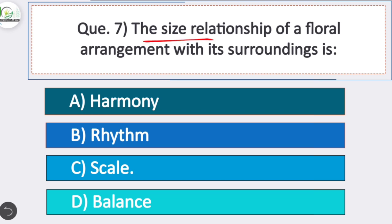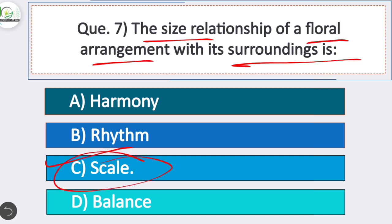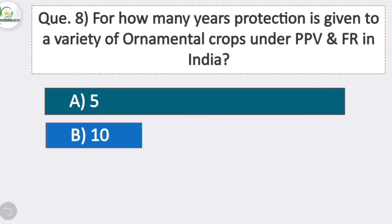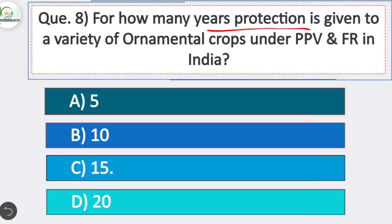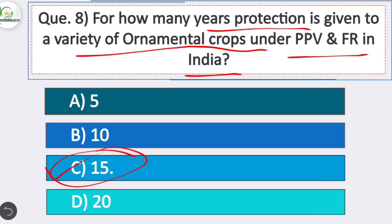Question 7: The size relationship of a floral arrangement with its surrounding is called — option C is correct — scale. Question 8: For how many years is protection given to a variety of ornamental crops under PPV and FR Act in India? Option C is correct — 15 years. PPV means Protection of Plant Variety and FR means Farmers' Rights.